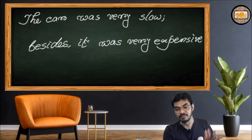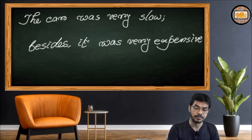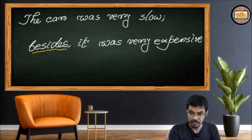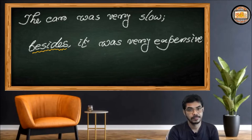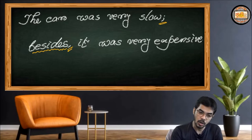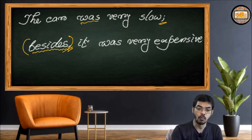Besides, it was very expensive. Now you'll say, 'Sir, what's so typical about this sentence? It's quite easy.' Yes, we can understand you are using 'besides' here — but so what? We use 'besides' in our sentences. Have you clearly observed the punctuation? Have you observed this semicolon and this comma? You would easily say 'besides' is a conjunction because it's joining two clauses.